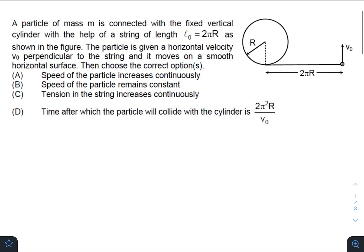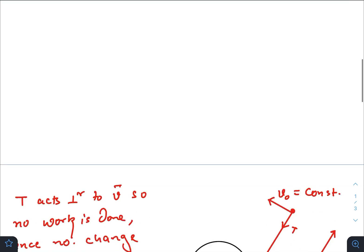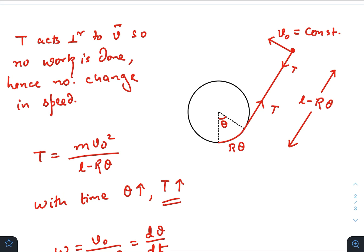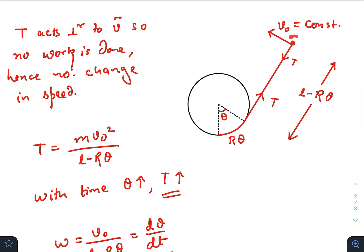Right, so if the speed remains constant, option B is correct. Now with increase in time, the length of the string that is not connected with the cylinder, that is not attached with the cylinder, decreases but speed remains the same.